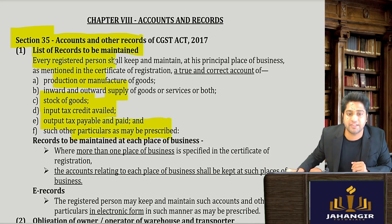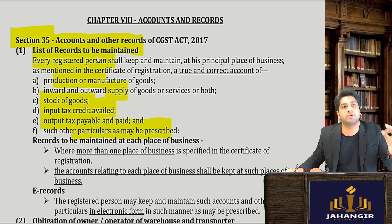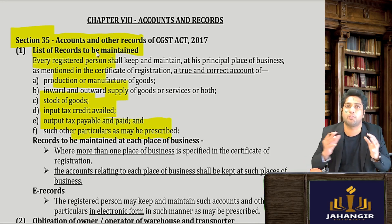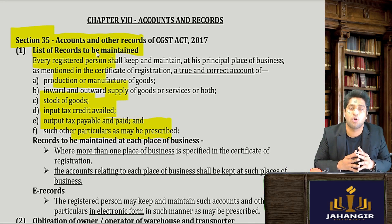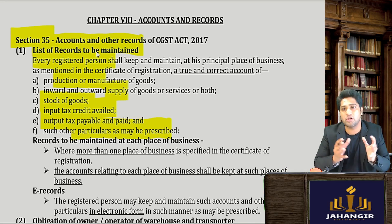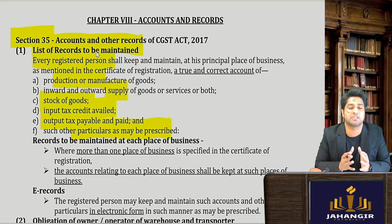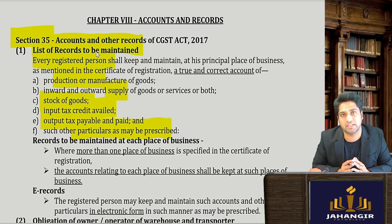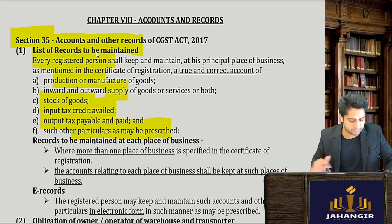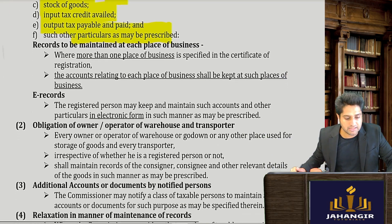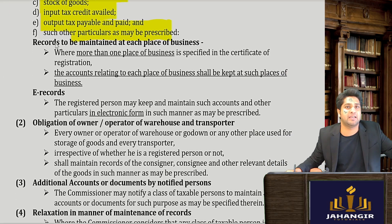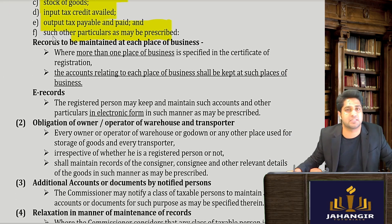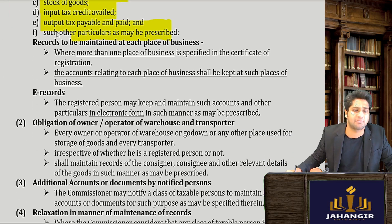So who has to maintain this? Every registered person has to maintain proper books of all the details with respect to the goods and services. What if I have more than one place of business — I could have 10 branches?